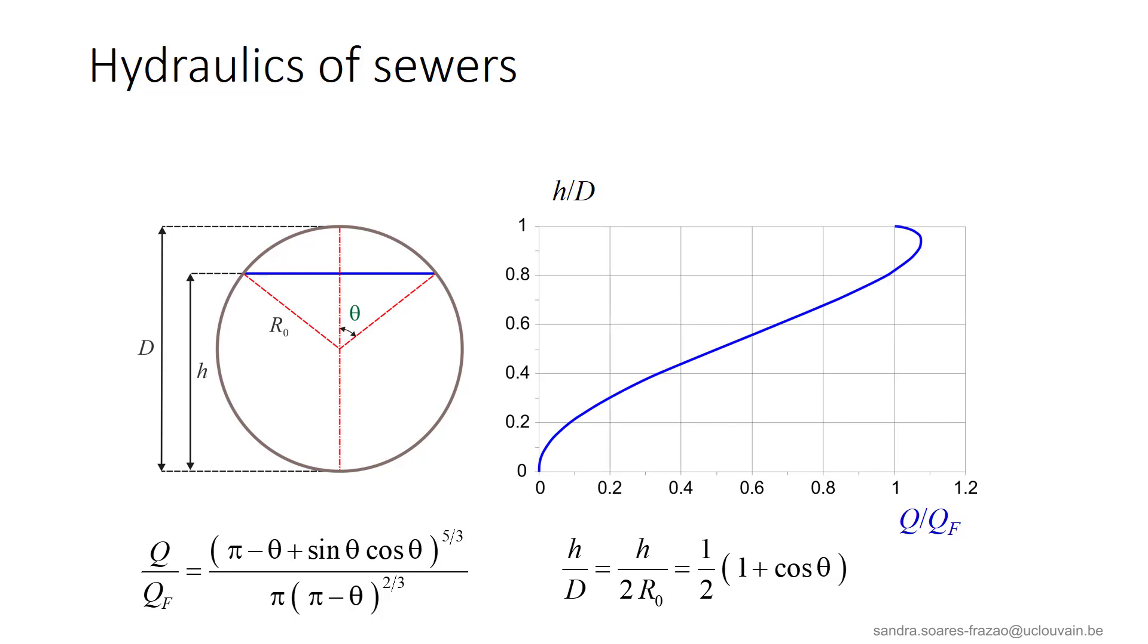We can see that, maybe surprisingly, the maximum discharge does not correspond to the full pipe discharge Qf. The maximum discharge occurs at a depth equal to 0.94D and has a value equal to 1.076 Qf. We also see that the discharge Qf is already obtained for a depth equal to 0.82D, so for a depth that is well below the full possible depth.